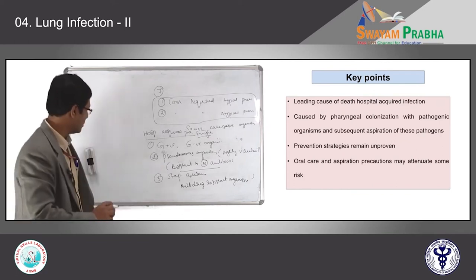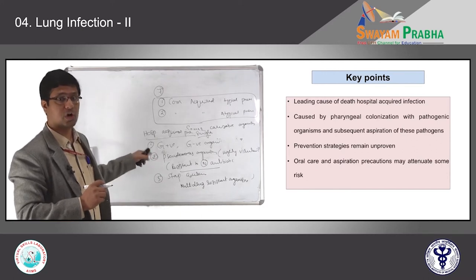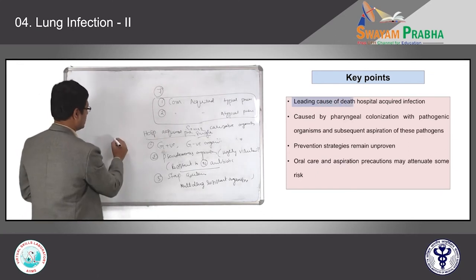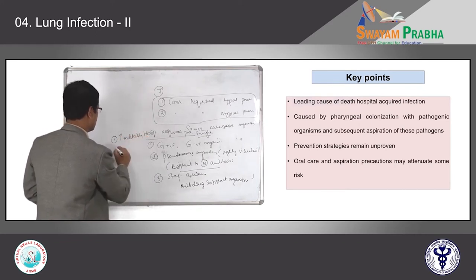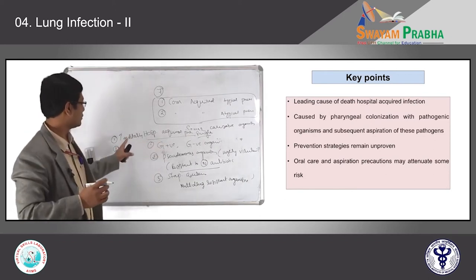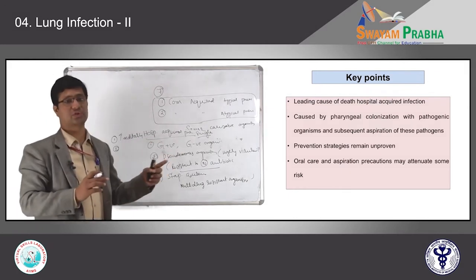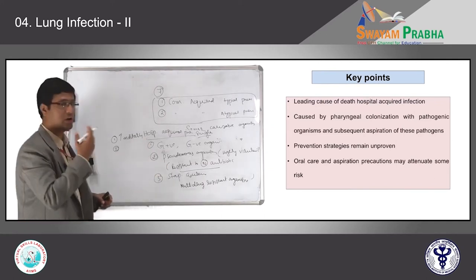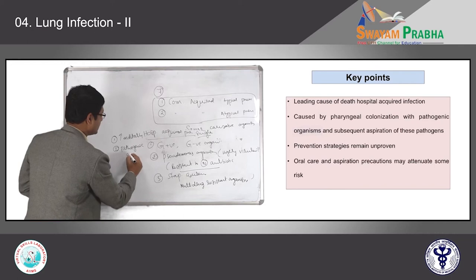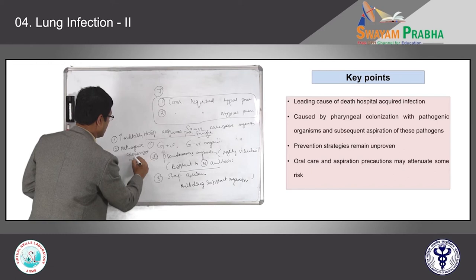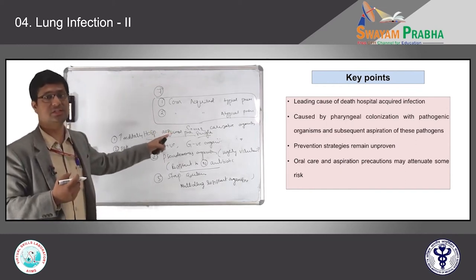What are the key points to remember in Nosocomial or Hospital-Acquired Pneumonia? First, Hospital-Acquired Pneumonia is one of the most common and leading causes of death — these patients will have high mortality and morbidity. Hospital-Acquired Pneumonia is one of the most common causes of hospital-induced death. Second, regarding pathogenesis: most of these organisms are inhaled and colonized from the tracheobronchial tree or in the mouth. These pathogenic organisms colonized in the oral cavity are later aspirated into the lung, causing damage and pneumonia or lung abscess.